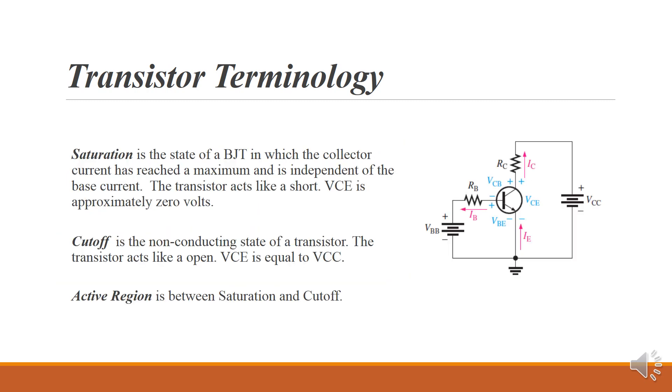Saturation is the state of a BJT when the collector current has reached its maximum. It means that any further increase in base current, the collector current is already maxed, it can't go up anymore. Basically, beta has lost control. At this point, the transistor acts like a short VCE, and VCE is approximately zero volts.